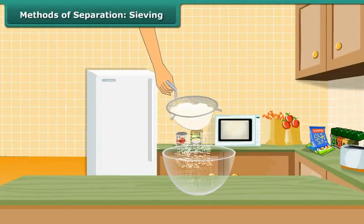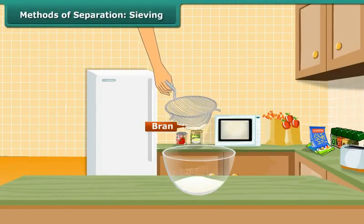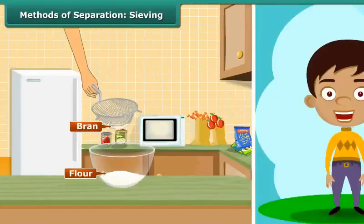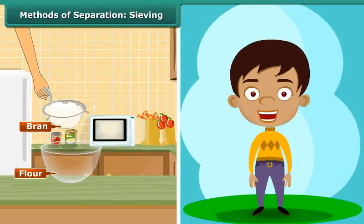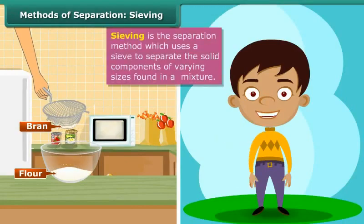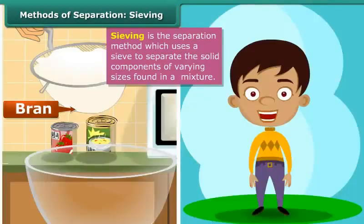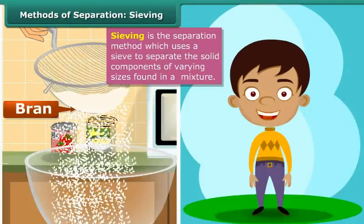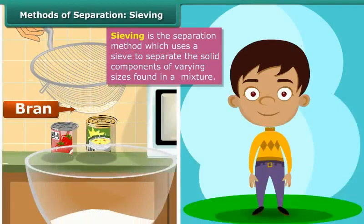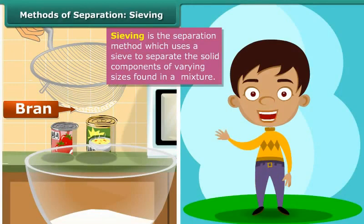Children, have you seen how your mother removes bran and other impurities from flour? They separate the coarse bran from the fine flour with the help of a sieve. This technique of using a sieve to separate the solid components of different sizes in a mixture is known as sieving. In this method, the mixture is placed on the sieve and shaken. Smaller particles pass through the holes of the sieve to the container placed below and are thus separated from the bigger particles that are retained in the sieve.